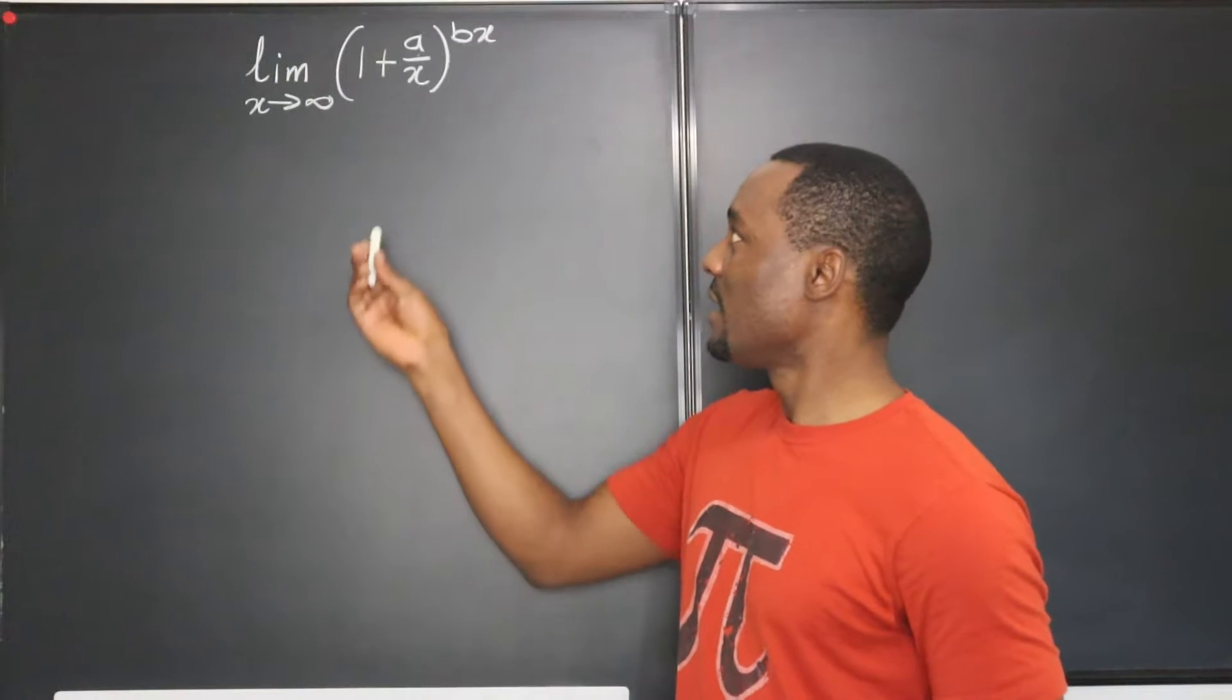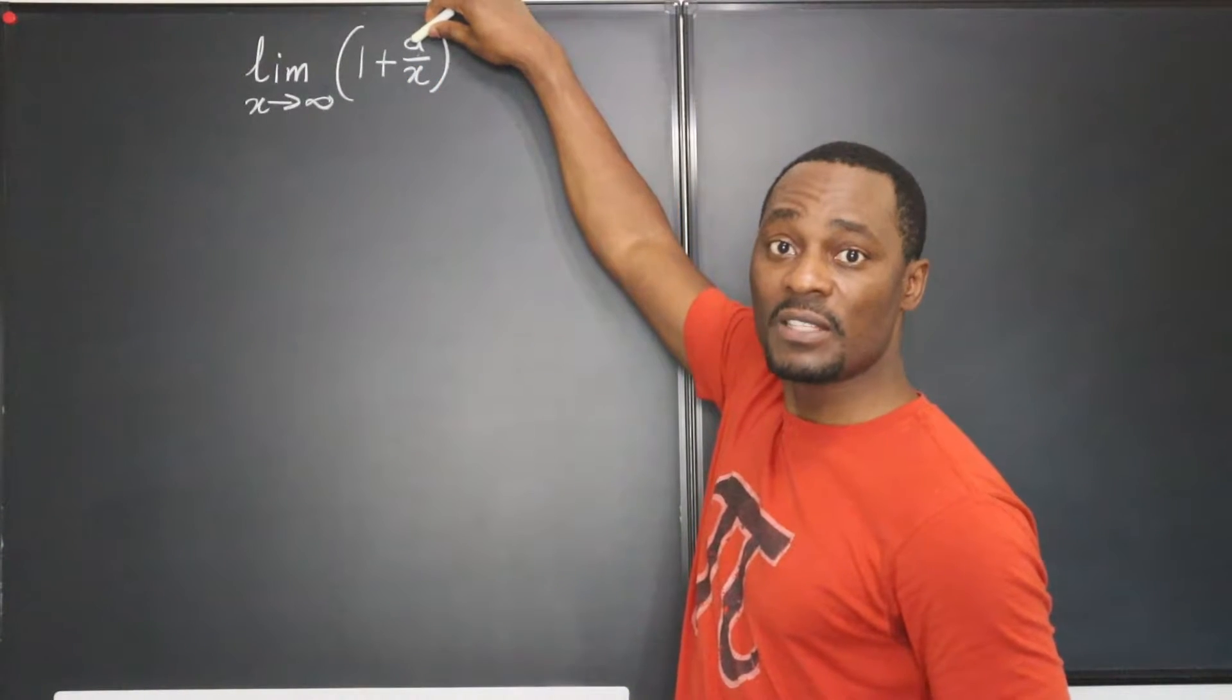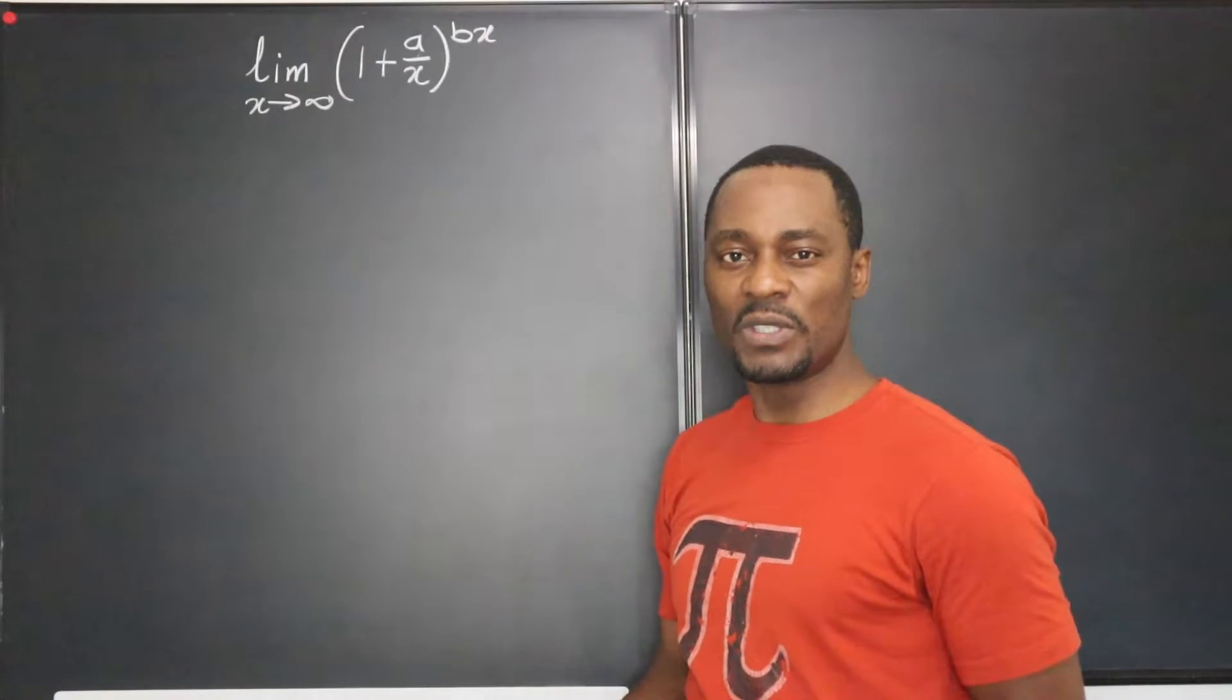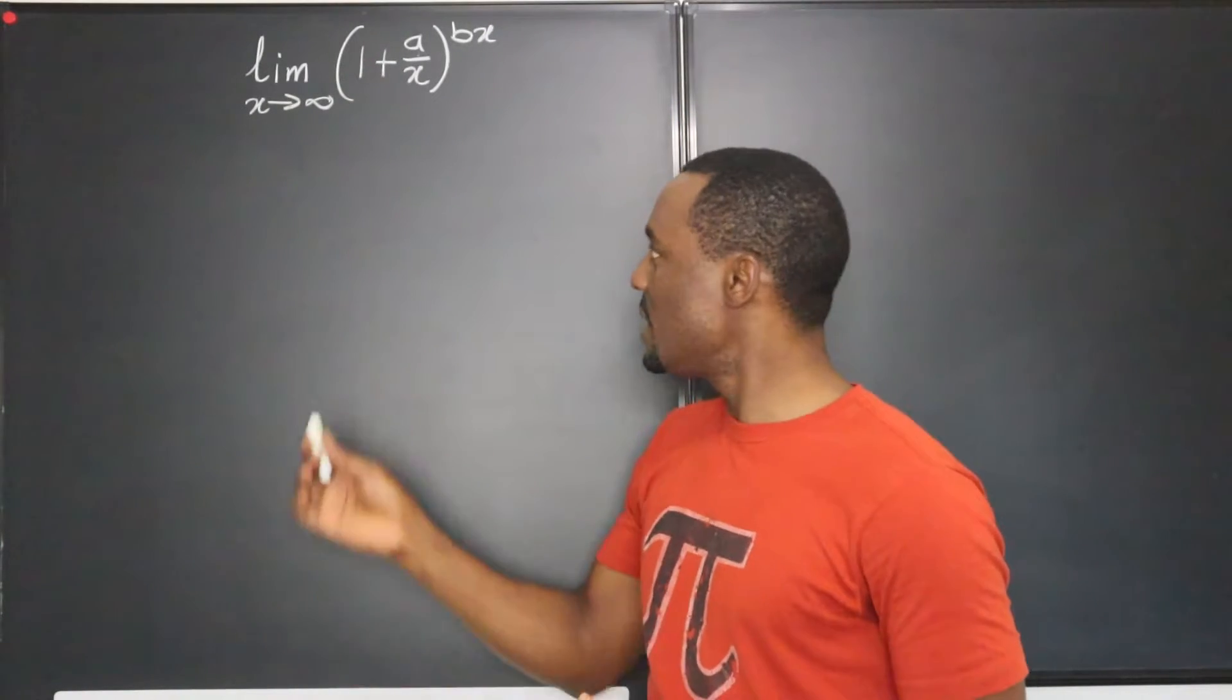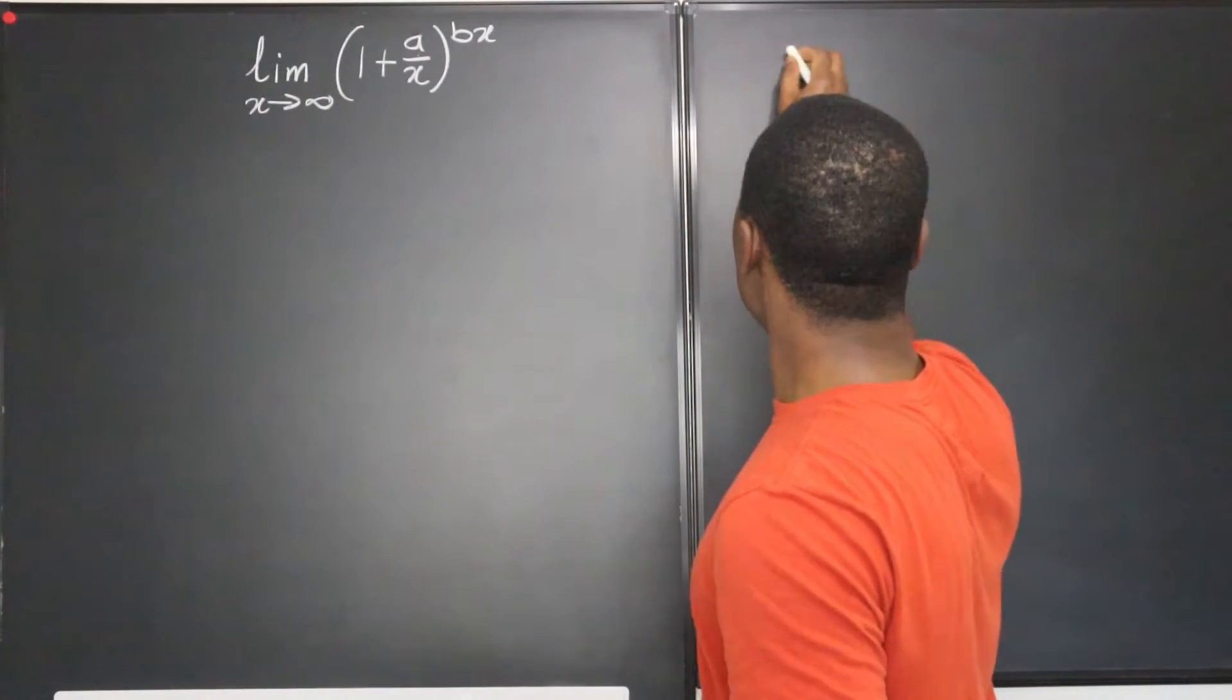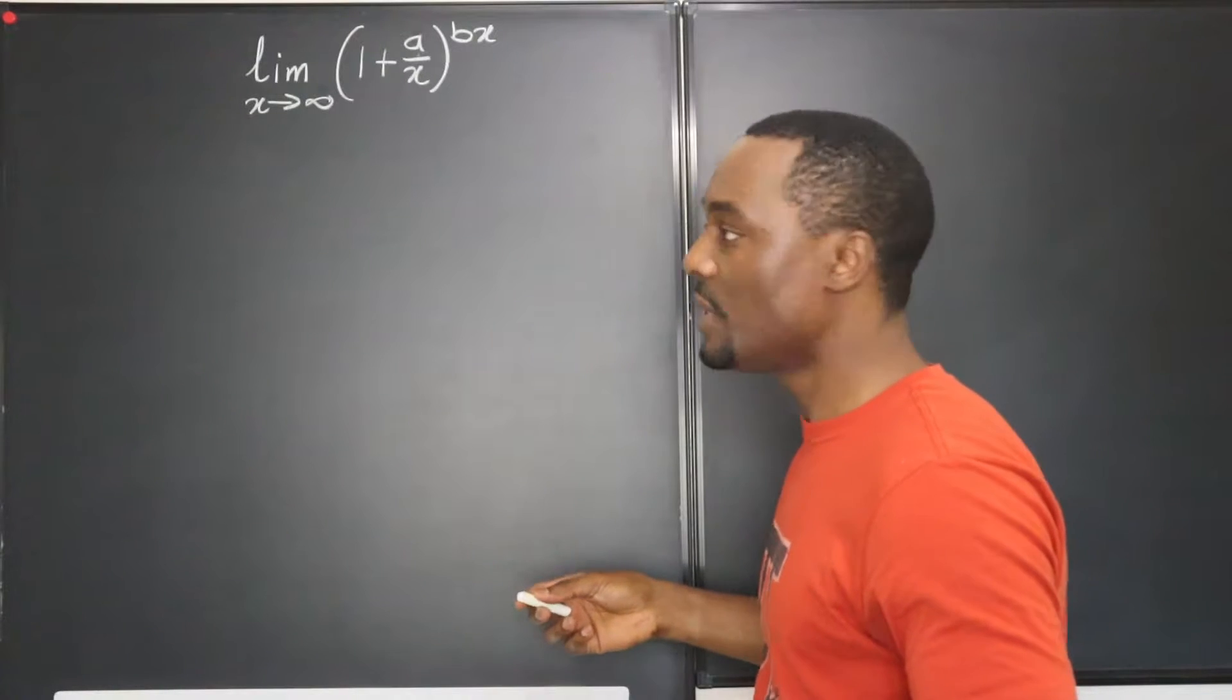However, the problem is that the 1 here has been replaced with a, and this x is not alone, there's a b multiplying it. What does that mean for your definition of e when you take the limit? Don't forget that this limit is how you define e.